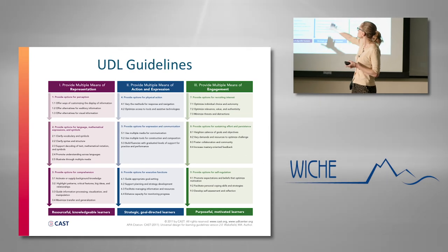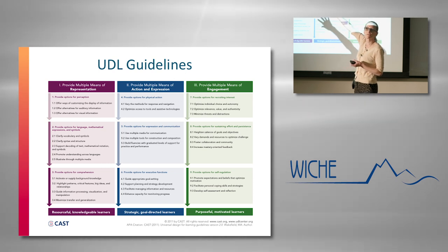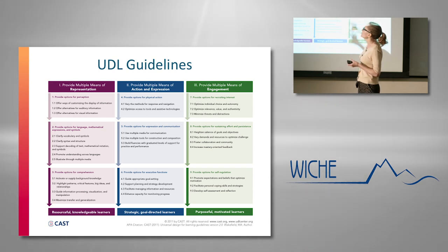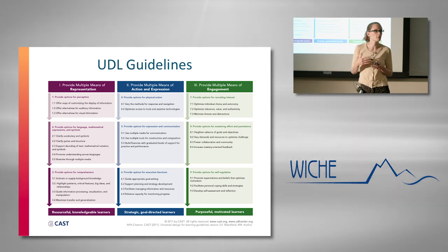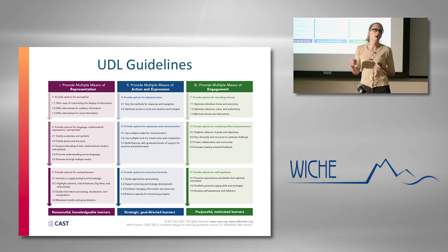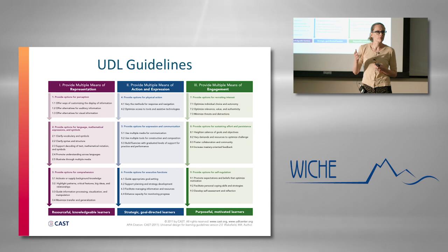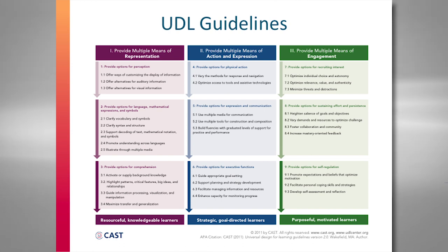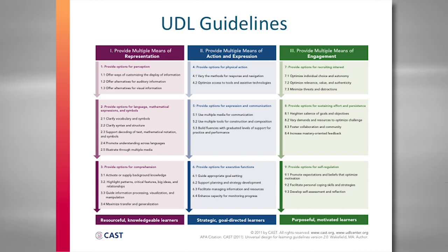We think of these principles as deepening as we go — from the top levels, which are really about accessibility concerns like web accessibility, customizing display of information, resizing fonts, adjusting color contrast, and making content compatible with assistive technology like screen readers. Individual choice and autonomy also fall here. These are basic access issues.